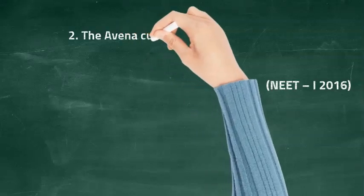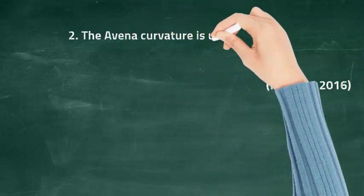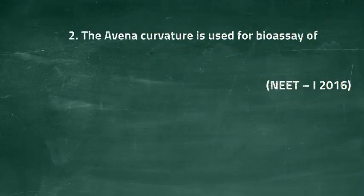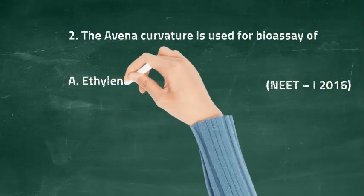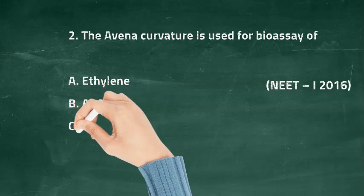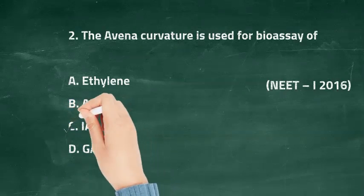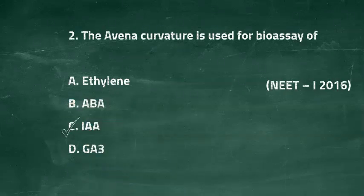Question two: the Avena curvature test is used for the bioassay of — option A: ethylene, option B: ABA, option C: IAA, and option D: GA3. The right answer is option C, IAA.